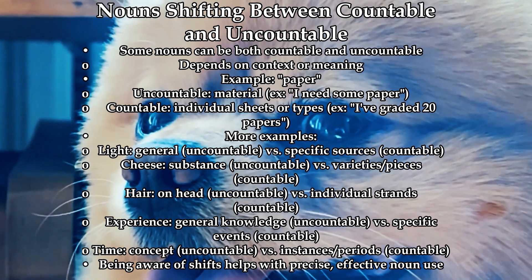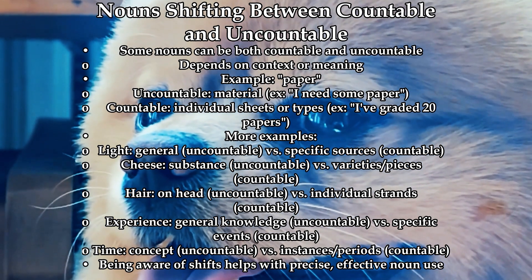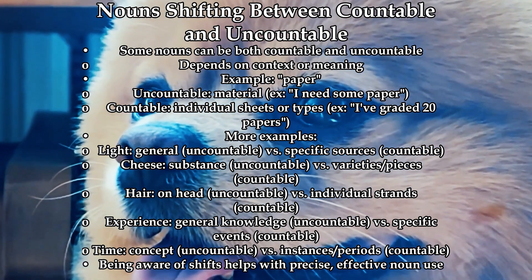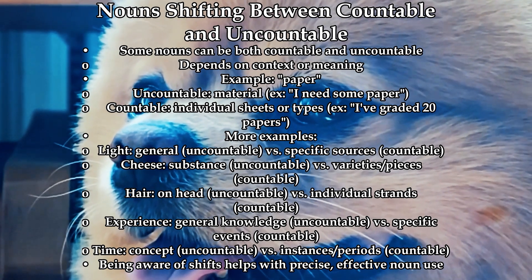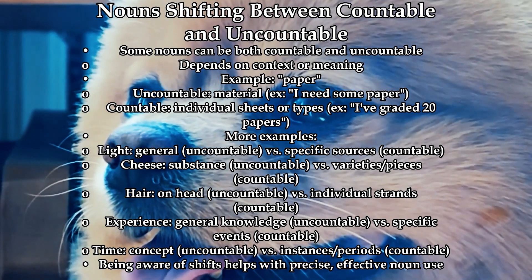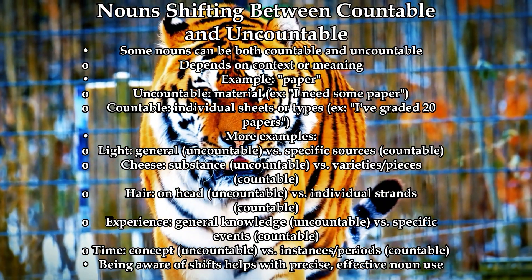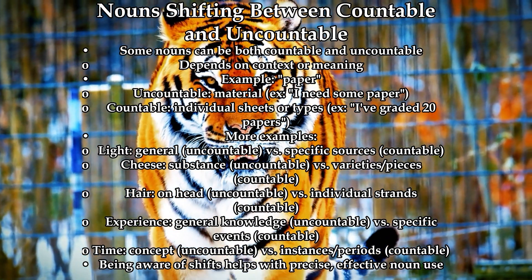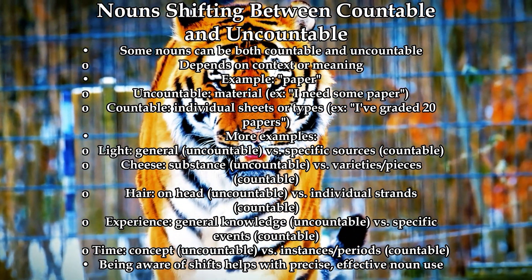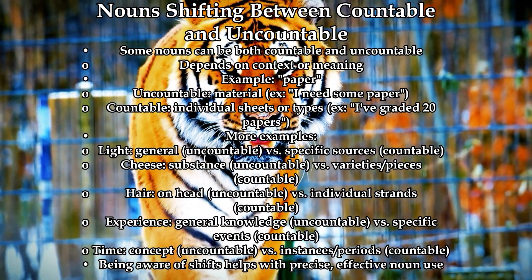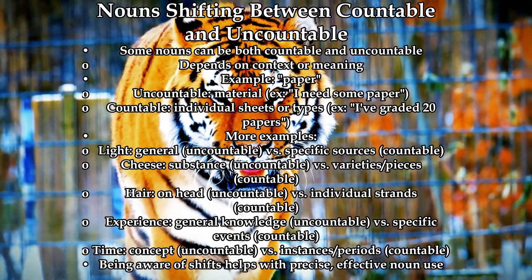Hair: when referring to the hair on one's head, 'hair' is uncountable, as in 'her hair is so soft and shiny.' But when talking about individual strands, it becomes countable, like 'I found a few gray hairs this morning.'